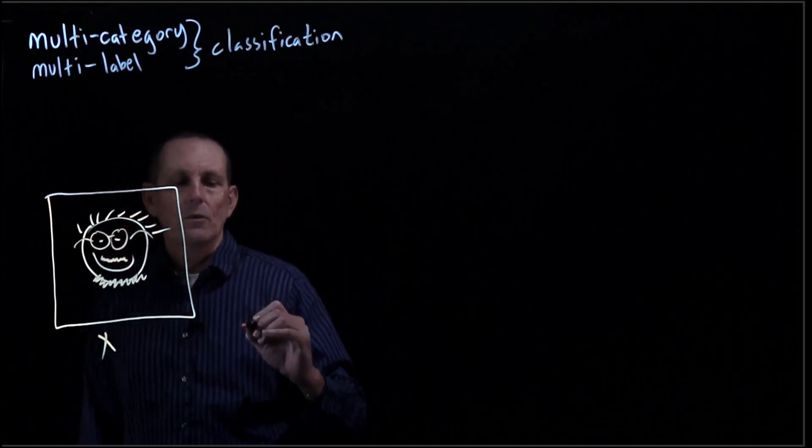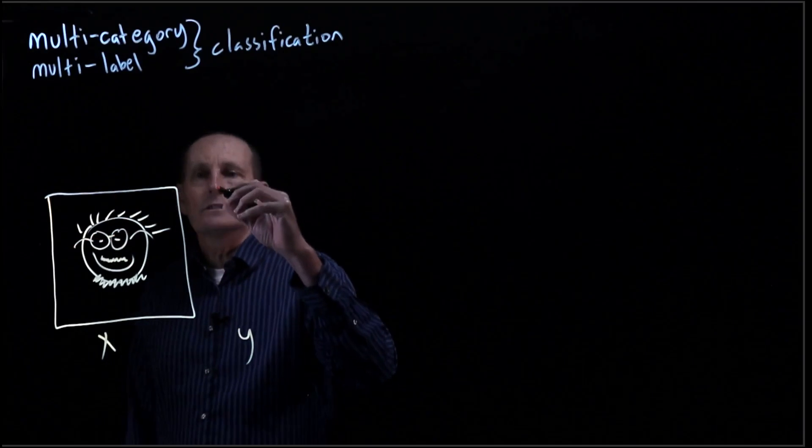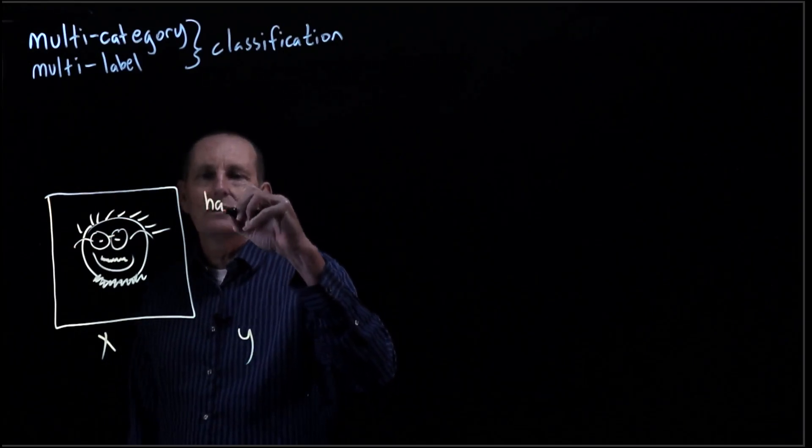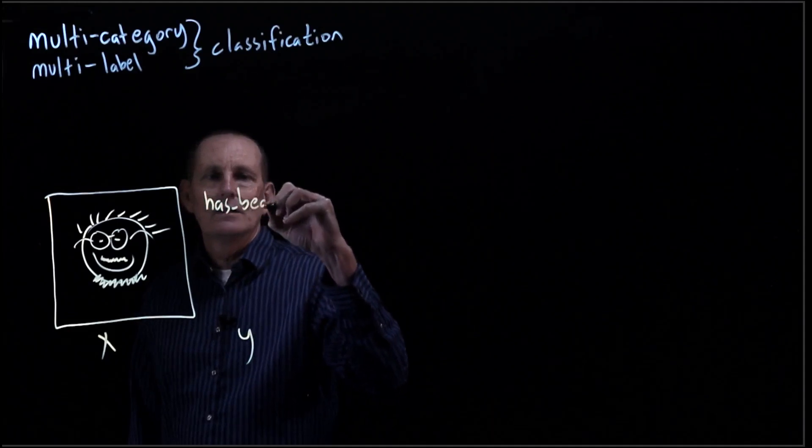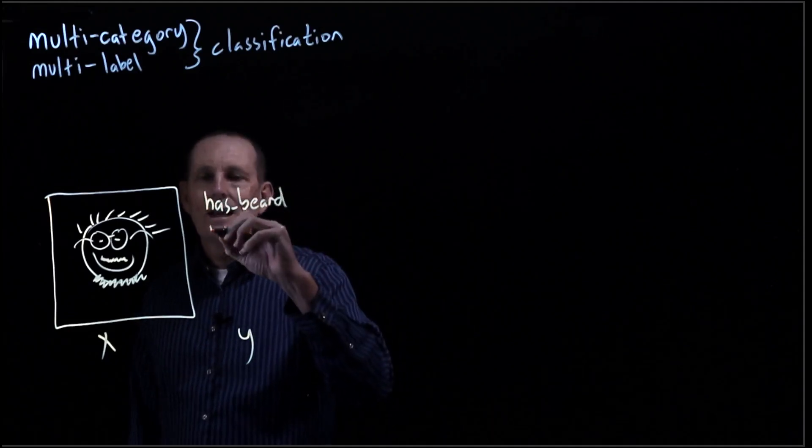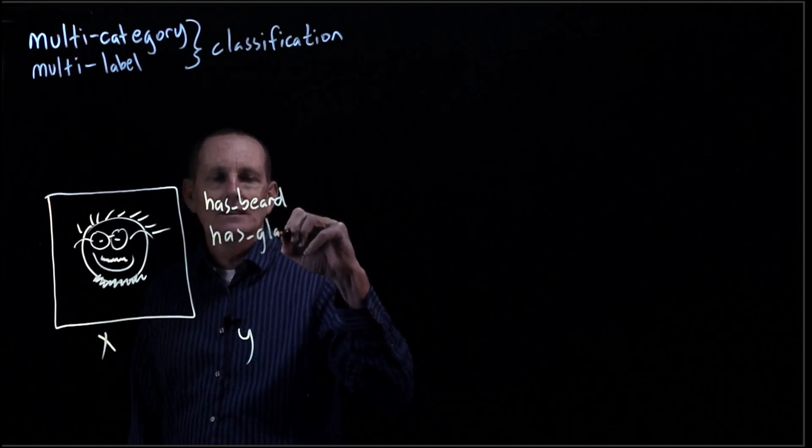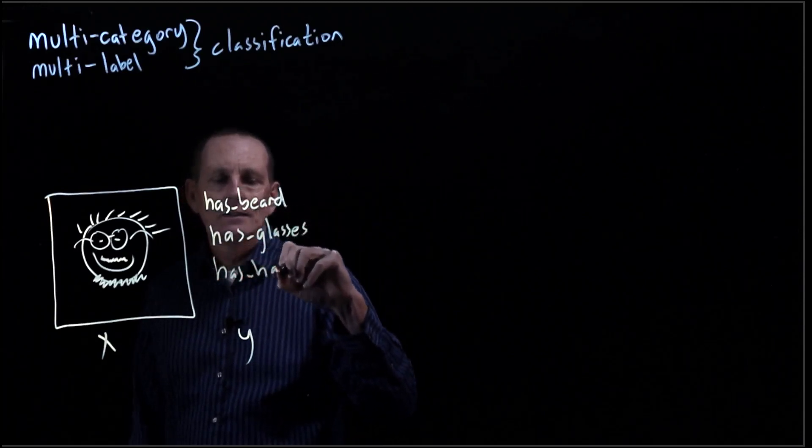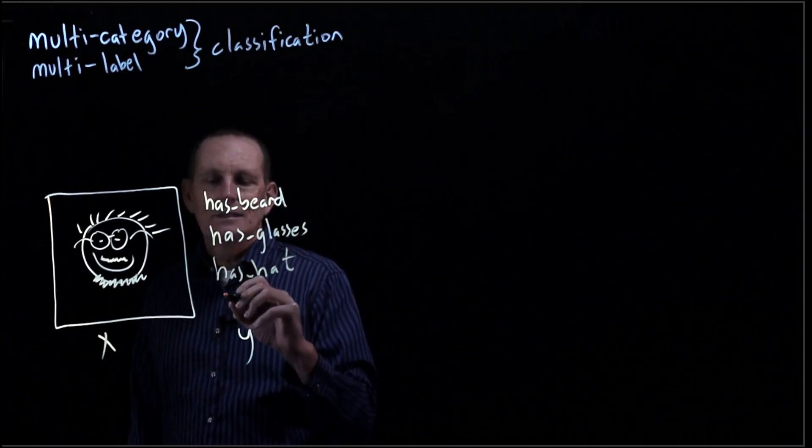And our output, our y, we want to know three things. We want to know, let's say, has beard, has glasses, has hat, and is happy.